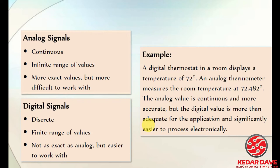With digital signals, if you get a different value it will be one of only two values — either 1 or 0. So it will either give you 1 or give you 0. That is called a discrete signal.